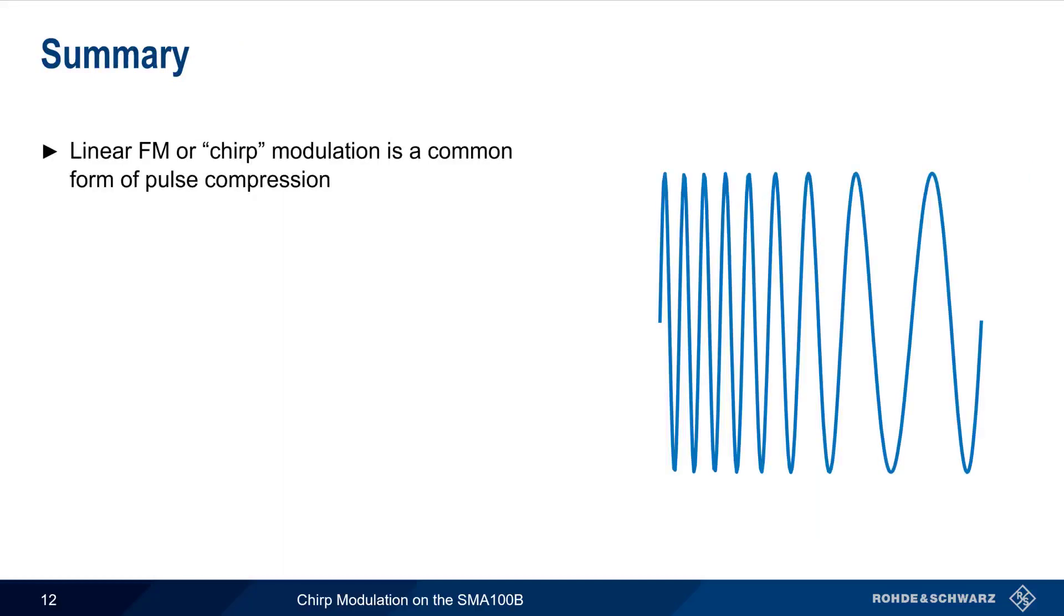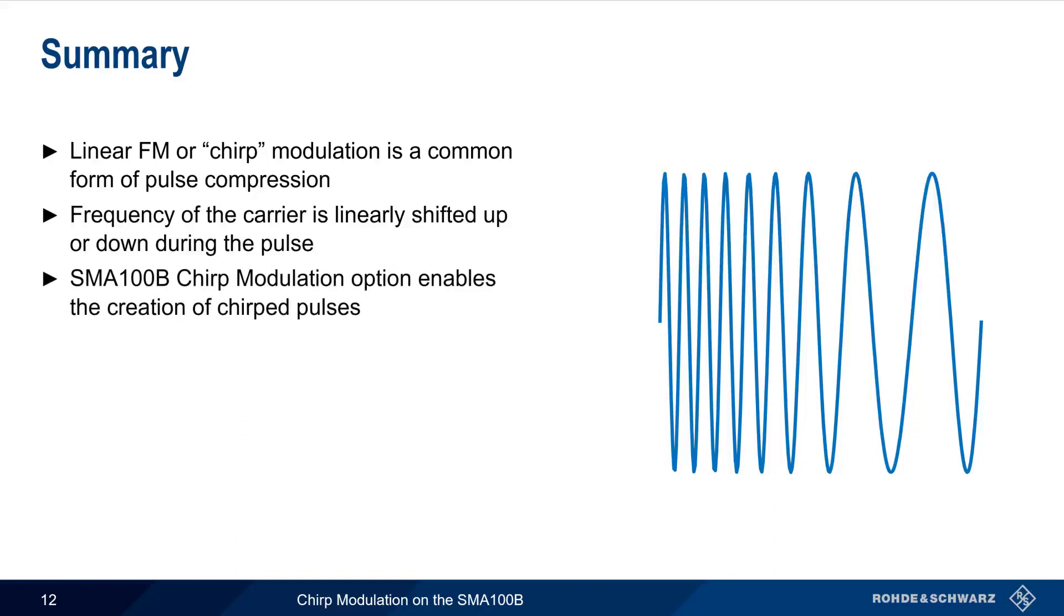Let's end with a brief summary. Linear FM or chirp modulation is one of the most common forms of pulse compression used in radar systems. This type of modulation involves linearly shifting the frequency of the carrier, up or down, during the pulse period. On the SMA 100B, the chirp modulation option enables the creation of chirped pulses. This can be done via a very simple graphical user interface, although programmatic configuration and control is also possible.